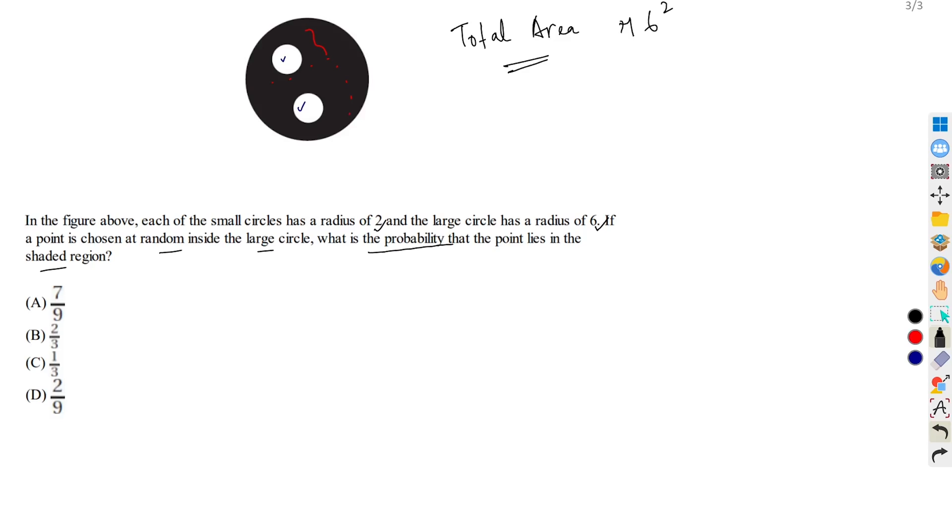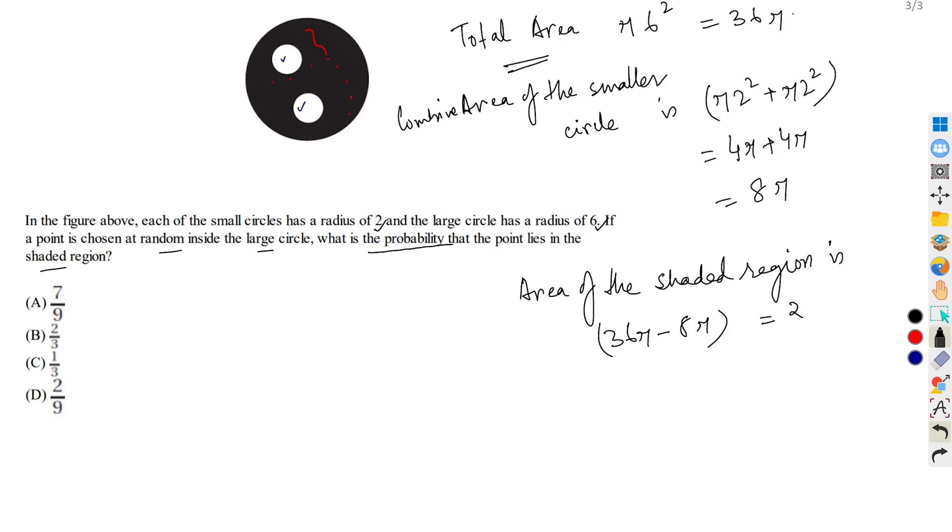What is the total area of this circle? Pi times 6 squared, that is 36 pi. What is the combined area of both small circles? Pi times 2 squared plus pi times 2 squared. This gives 4 pi plus 4 pi, that is 8 pi. So we have to exclude this 8 pi from 36 pi. We obtain the area of the shaded region is 36 pi minus 8 pi, this gives 28 pi.